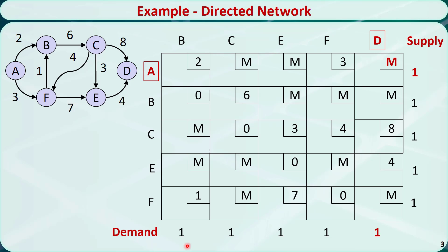The cost coefficient is the length of the arc if such an arc exists. For example, from A to B, the cost is 2. From A to F, the cost is 3. The cost coefficient is M if an arc does not exist between these two nodes. For example, from A to C, the cost is M.